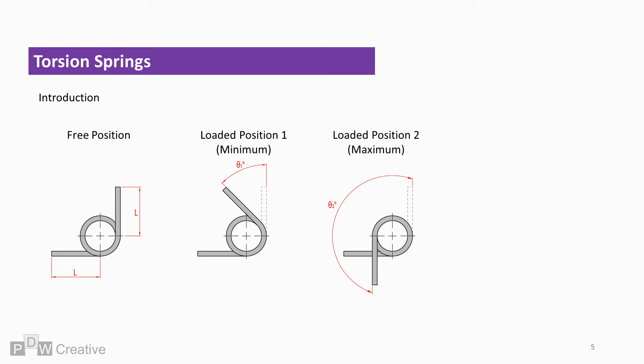The spring is expected to operate between the two angles when installed within an assembly, so everything between these points is our operating window.